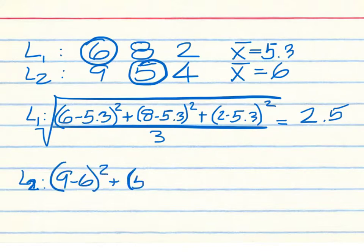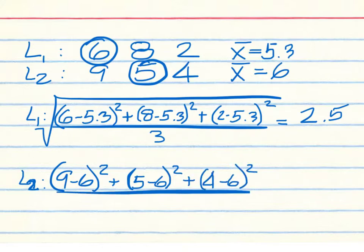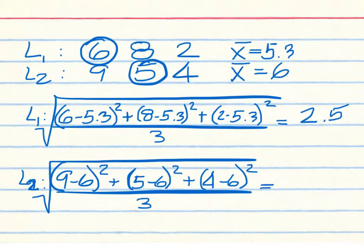5 minus 6, square it, and 4 minus 6, square that. Divide all by 3 and take the square root. The standard deviation of List 2 is 2.2.